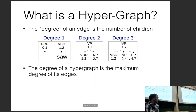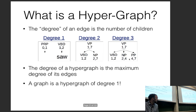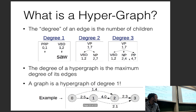The degree of a hypergraph is the maximum degree of its edges. A graph is simply a hypergraph of degree one, so a normal graph is just a special case of this more general structure. A graph of degree one corresponds to something like part-of-speech tagging or named entity recognition.